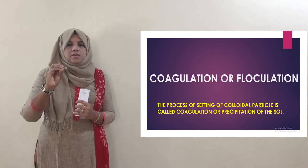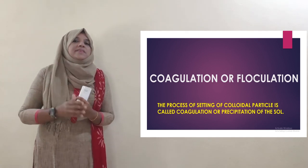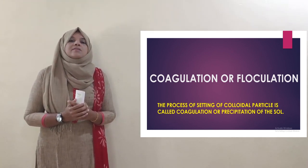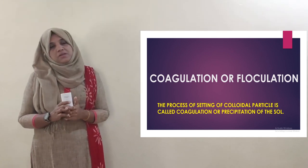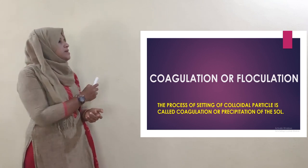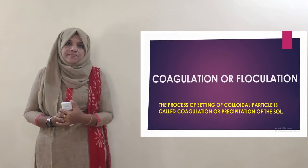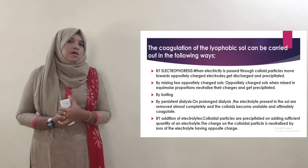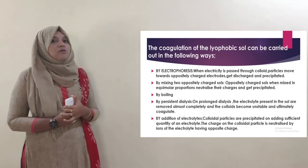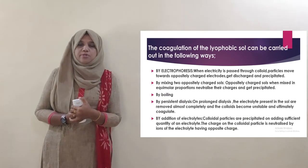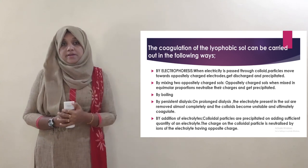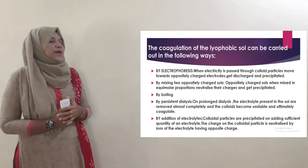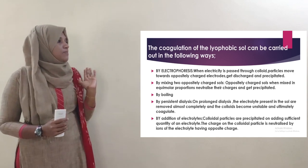For example, when lemon juice is added to milk, it will be precipitated — that is a process of coagulation. The coagulation of lyophobic sols can occur by several methods.